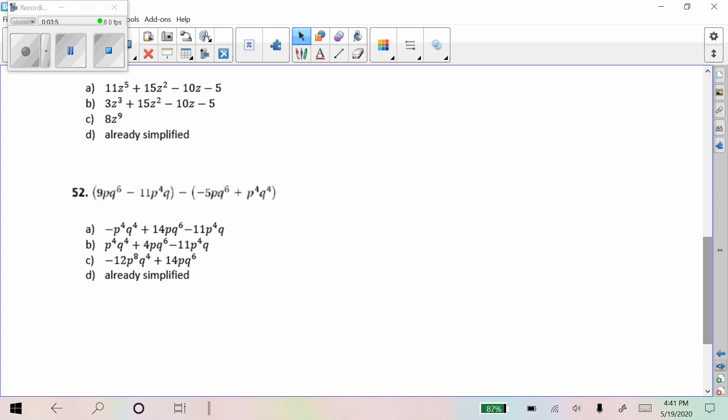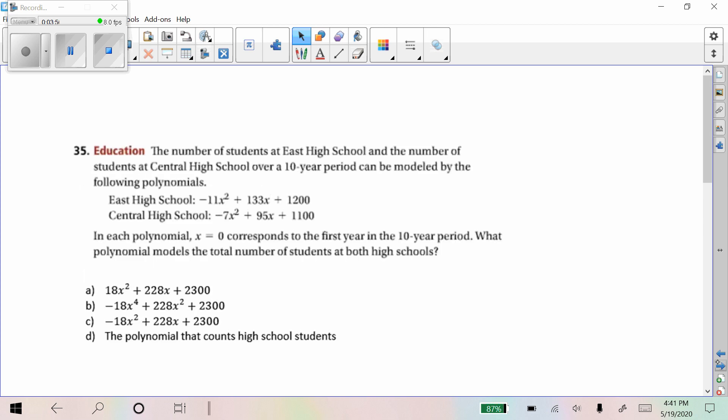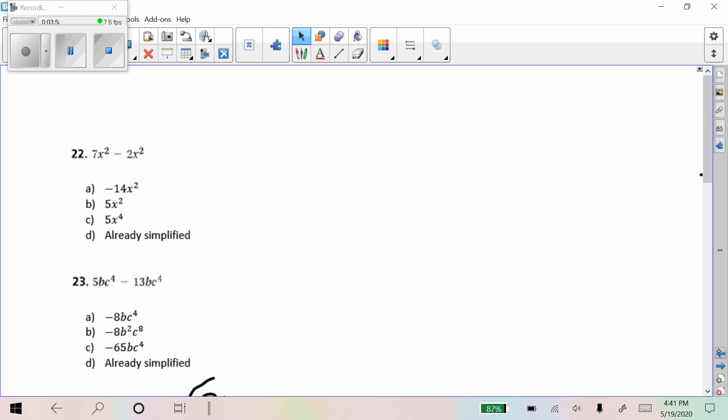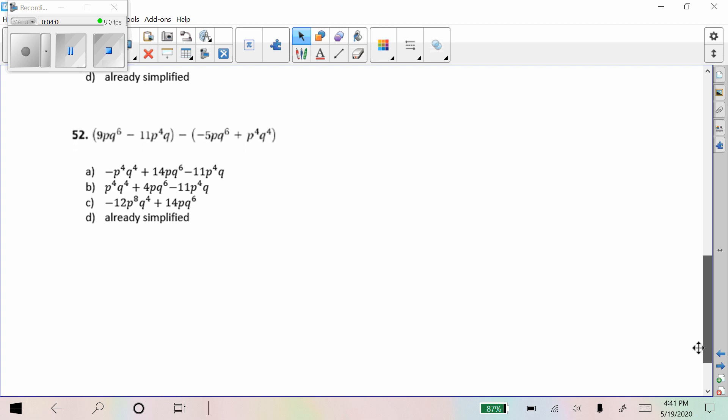Okay. Maybe that's what happened on this next problem, too. Number 19. I'm going to go over both of them because I'm not sure which one it was. But on this one, again, we need to distribute this negative. So we get a plus five PQ to the sixth. And then a minus P to the fourth Q to the fourth. And then when we combine like terms, we can add this five with this nine. And that makes 14.